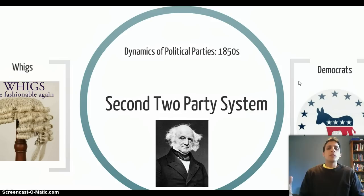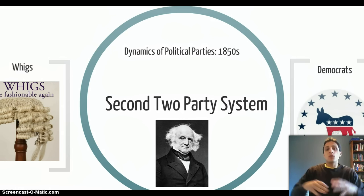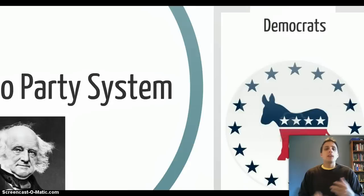It can get a little complicated if you don't follow it closely, so hopefully this will make it clear. If you understand the political party system — how it disintegrates and what replaces it — the political party system of the 1850s is known as the second two-party system. The second two-party system really began in the 1820s with Andrew Jackson and the creation of the Democratic Party. Later on in the 1830s, the Whigs also came in. So the two-party system refers to the Democrats on one hand and the Whigs on the other.